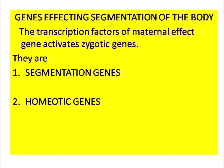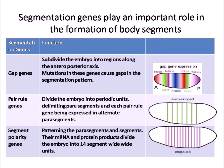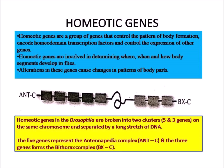Regarding dorsal-ventral polarity, the maternal genes are dorsal and toll. The function involves activation of the toll gene, leading to the development of the dorsal-ventral axis. Spatzle is the protein product that activates the toll gene. The transcription factors of maternal effect genes activate zygotic genes — segmentation genes and homeotic genes. Segmentation genes play an important role in the formation of body segments. Examples of segmentation genes are gap genes, pair-rule genes, and segment polarity genes. Gap genes subdivide the embryo into regions along the anterior-posterior axis; mutations in these genes cause gaps in the segmentation pattern. Pair-rule genes divide the embryo into periodic units delimiting parasegments, with each pair-rule gene expressed in alternate parasegments. Segment polarity genes pattern the parasegments and segments, and their mRNA and protein products divide the embryo into 14 segment-wide units.